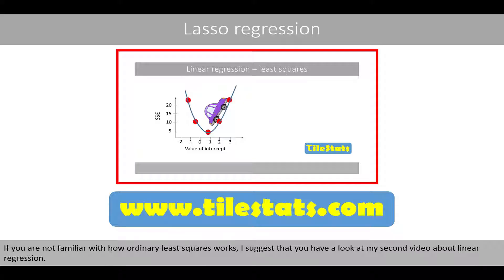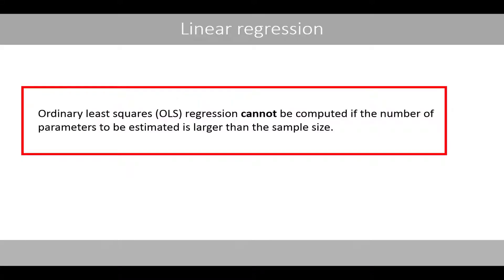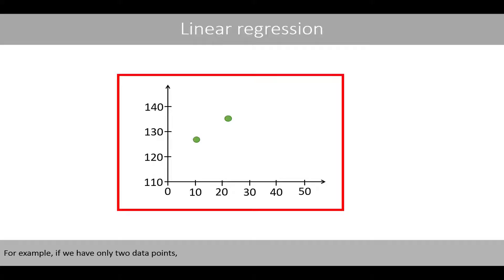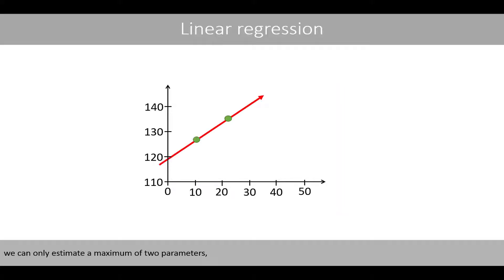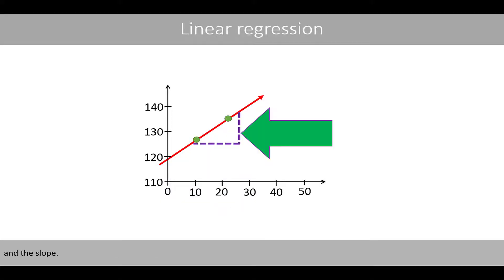If you're not familiar with how ordinary least squares works, I suggest that you have a look at my second video about linear regression. Ordinary least squares regression cannot be computed if the number of parameters to be estimated is larger than the sample size. For example, if we have only two data points, we can only estimate the maximum of two parameters, the intercept and the slope.